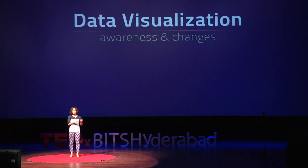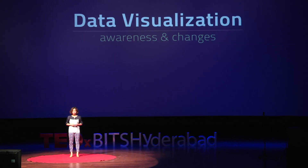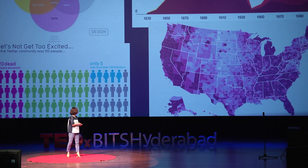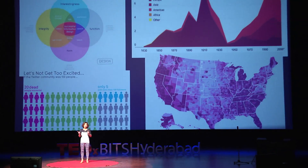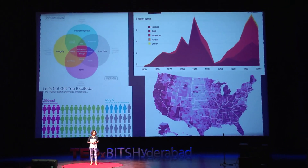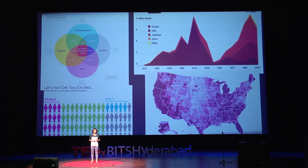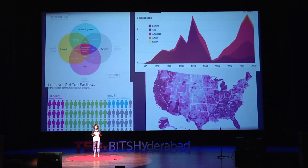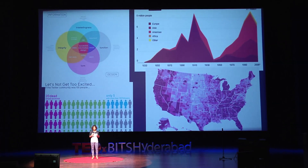When you hear data and visualization, this kind of visual might come to your mind first. Charts, graphs, and maps show data in a visual spectrum. But I would say this is infographics, not data visualization, because someone interpreted the data and converted the information and transferred it into visual elements.